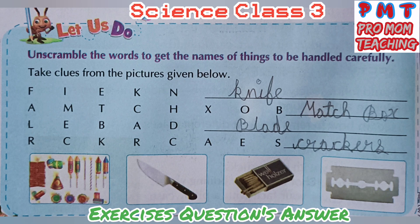Unscramble the words to get the names of things to be handled carefully. Take clues from the pictures given below. First one is knife: K-N-I-F-E. Second one is matchbox: M-A-T-C-H-B-O-X. Third one is blade: B-L-A-D-E. Fourth one is crackers: C-R-A-C-K-E-R-S.